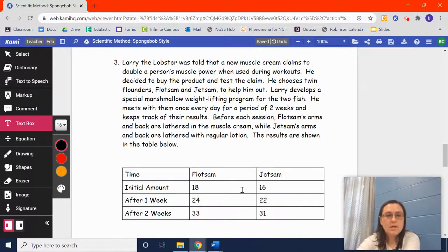Next, Larry the Lobster was told that a new muscle cream claims to double a person's muscle power when used during workouts. He decided to buy the product and test the claim. He chooses twin flounders, Flotsam and Jetsam, to help him out. Larry develops a special marshmallow weightlifting program for the two fish. He meets with them once every day for a period of two weeks and keeps track of their results. Before each session, Flotsam's arms and back are lathered in the muscle cream, while Jetsam's arms and back are lathered with regular lotion. The results are shown in the table below.